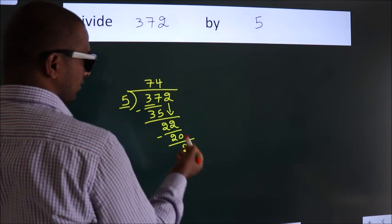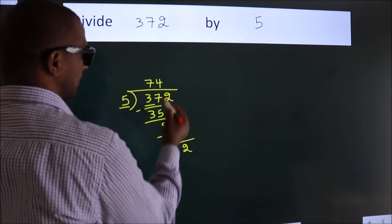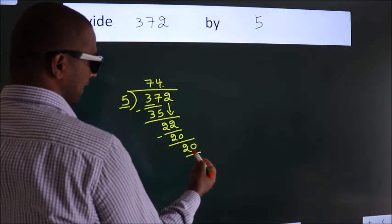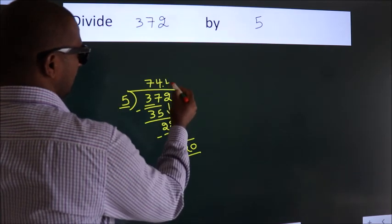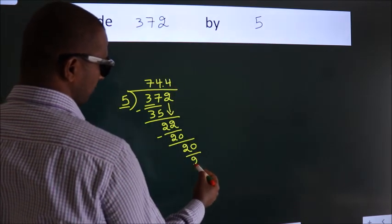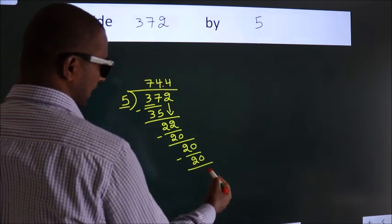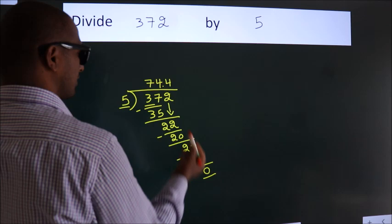After this, no more numbers to bring down. So what we do is put a dot and take 0, making 20. When do we get 20 in the 5 table? 5 times 4, 20. Now we subtract. We get 0. We got remainder 0, so this is our quotient.